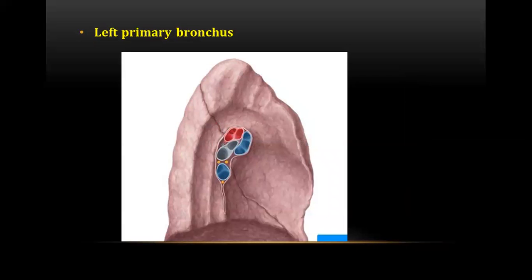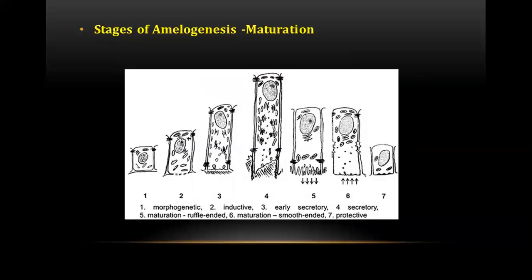The next question was about the left primary bronchus. A bronchus is a passage or airway in the respiratory system that conducts air into the lungs. The first bronchi to branch from the trachea are the main or primary bronchi.